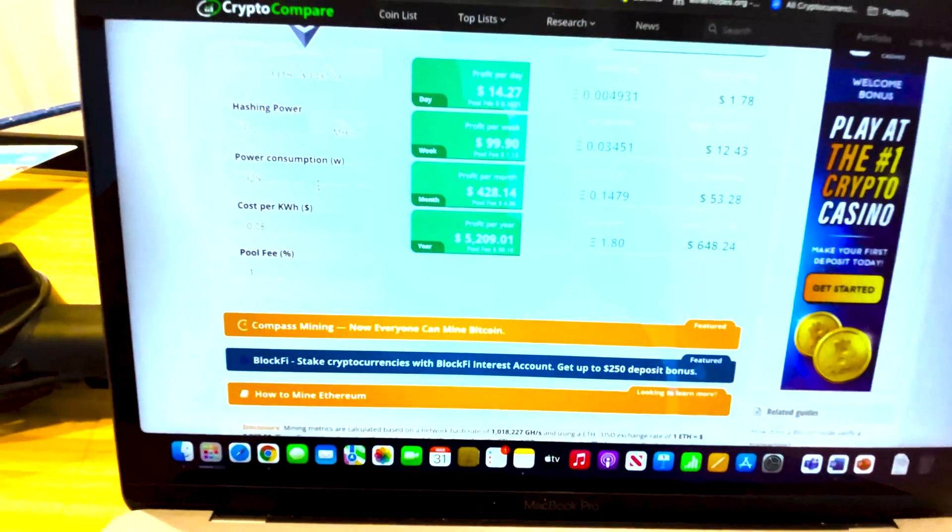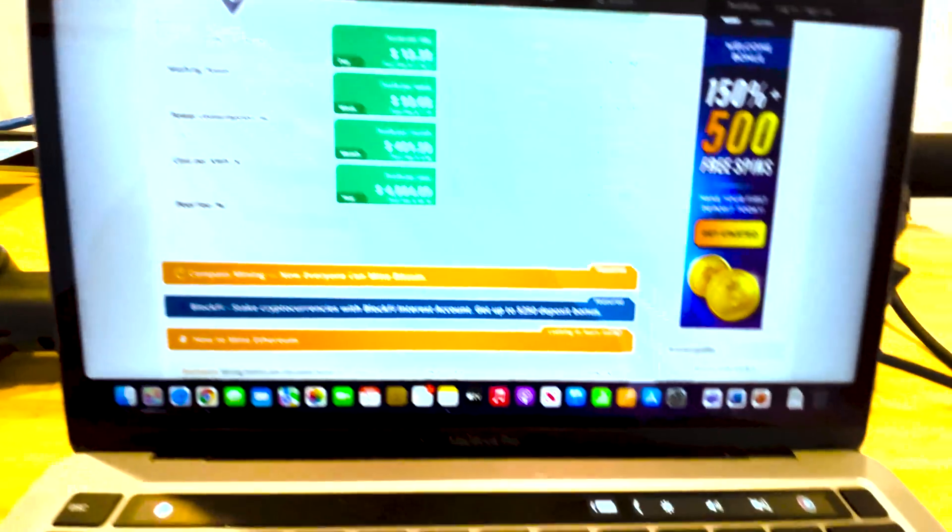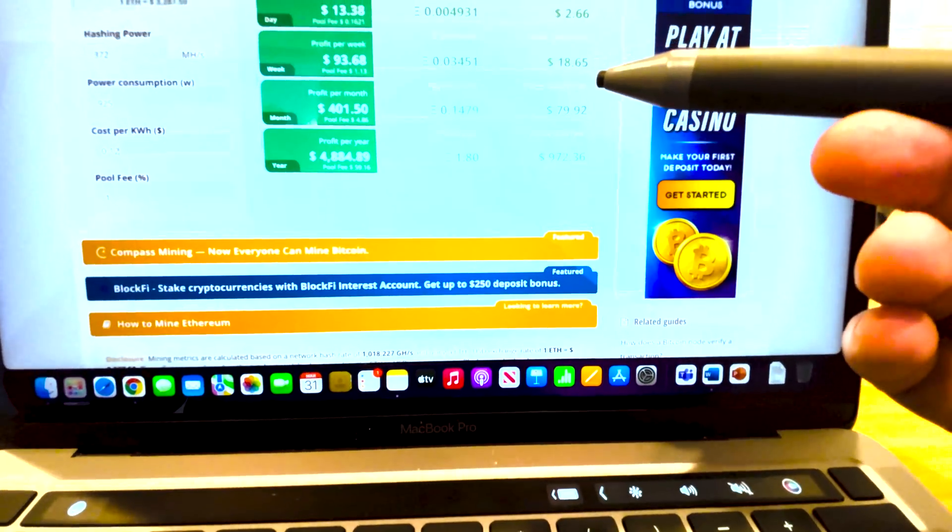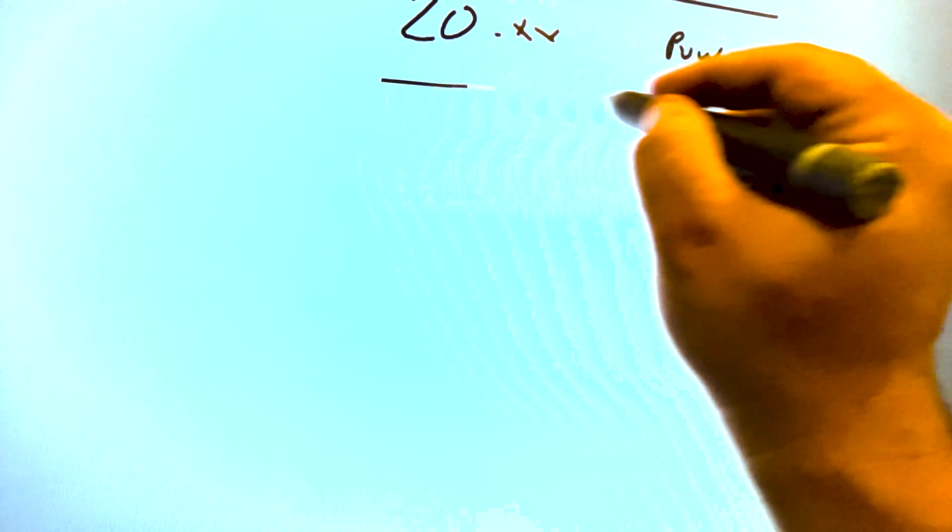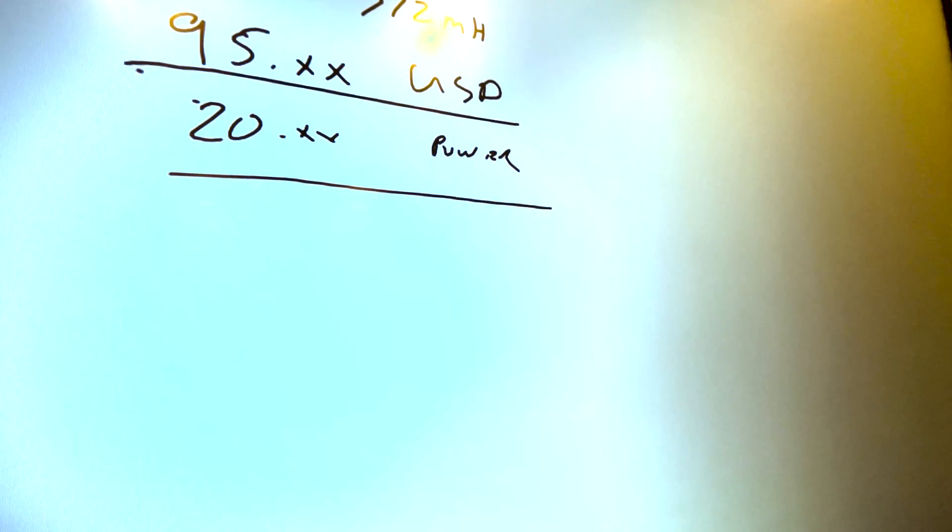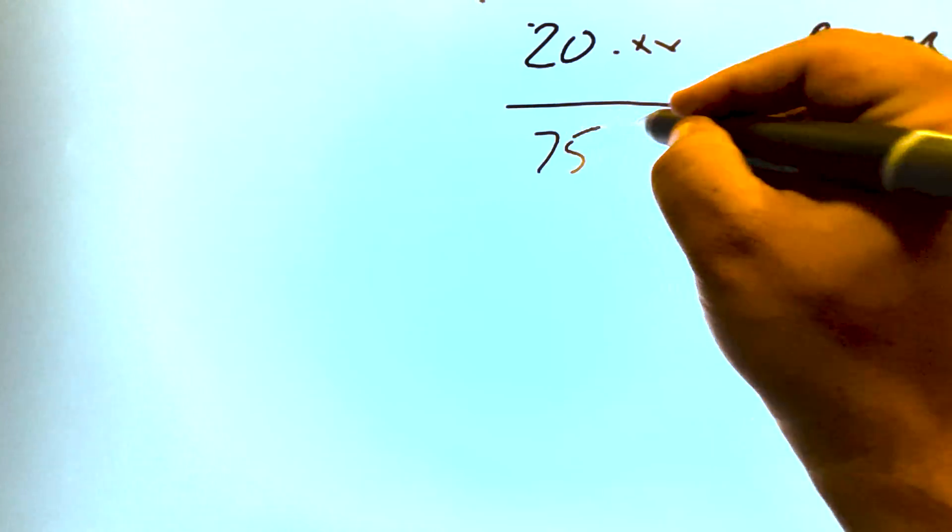Depending on your power cost, if you're at eight cents per kilowatt, let's just do 12 cents. Twelve is kind of a happy medium, so you're going to look at having a weekly power cost of about 20 bucks. So 20 dollars of that is going to power. Then you would end up making the difference there, minus those two things. That's 75 bucks a week.